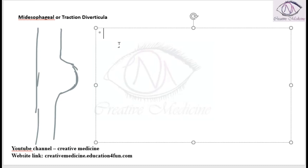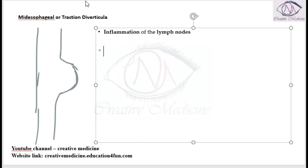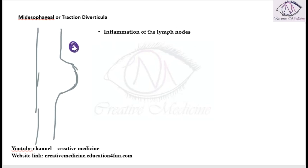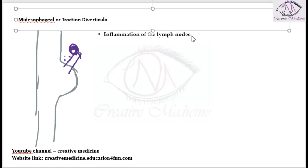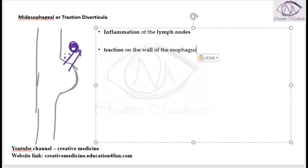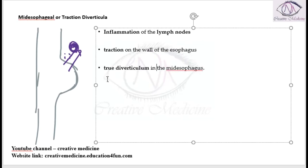Whenever there is inflammation of the lymph nodes, these inflamed lymph nodes — which are actually attached to the wall of the esophagus — cause traction on the wall of the esophagus, leading to the formation of this traction diverticulum in the mid esophagus. This is mainly due to inflammation of the lymph nodes.